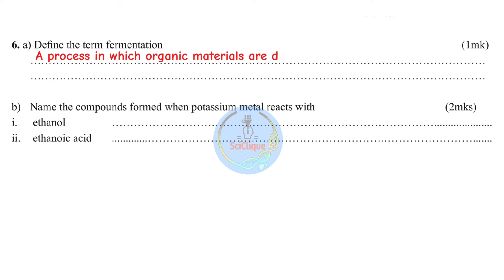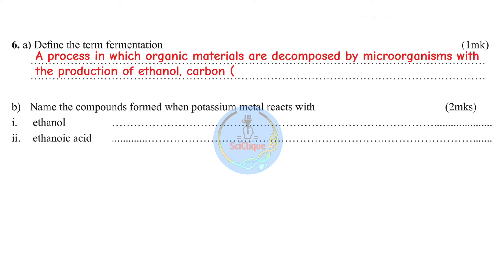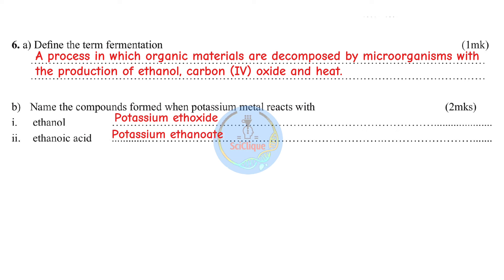Question six: define fermentation. This is the process in which organic materials are decomposed by microorganisms with the production of ethanol, carbon dioxide, and heat. Part b: name the compounds formed when potassium metal reacts with ethanol — potassium ethoxide. With ethanoic acid you get a salt referred to as potassium ethanoate.